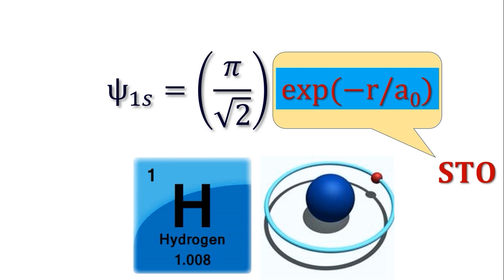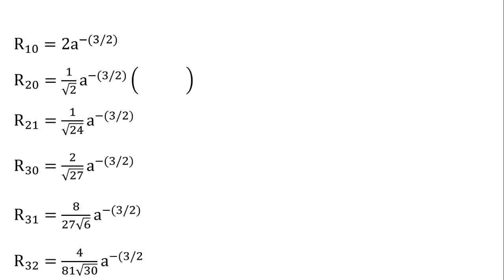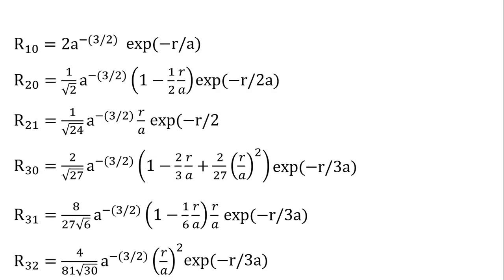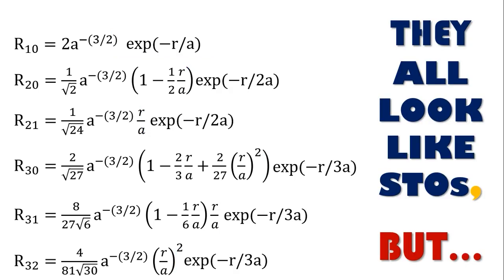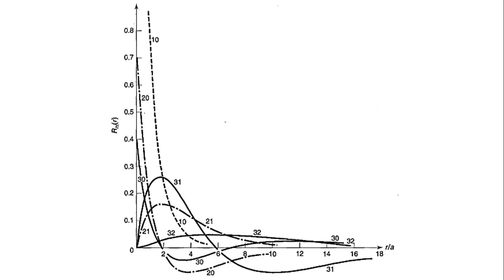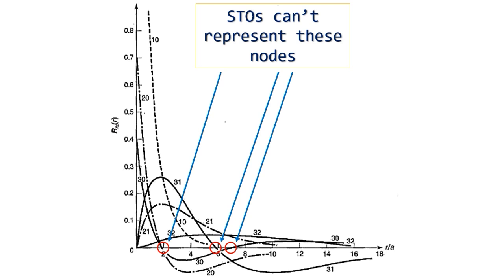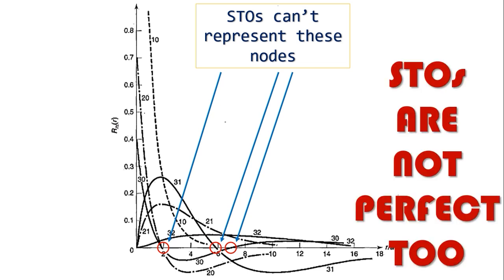The 1s is trivial. Now take a look at these wave functions. It's right that all these have the form of exponential of minus alpha r, but there are other dependencies on r too. If you look at these plots — that is, the plot of the orbitals — radial nodes can be seen in some orbitals, which cannot be reproduced by one Slater type orbital. Therefore, the message is that STOs are not perfect either.